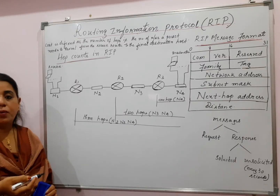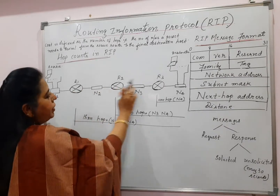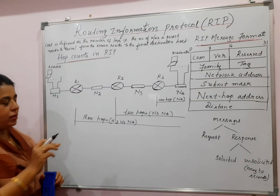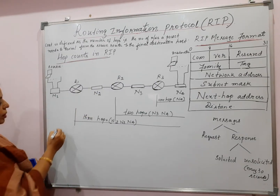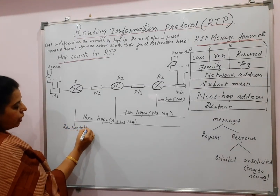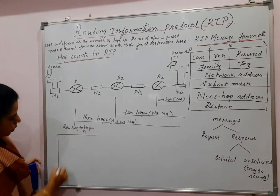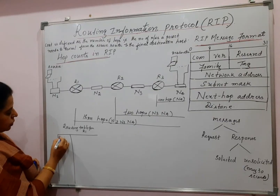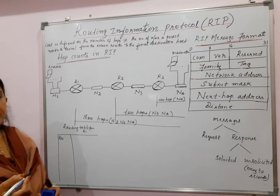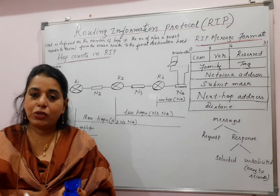To construct the routing table, this particular network has three routers, so you will be constructing three routing tables — one for each router. Routing table for R1: always remember you are going to write the destination. In the routing information protocol, based on distance vector routing, you include three columns — the destination network, the next hop, and the cost.